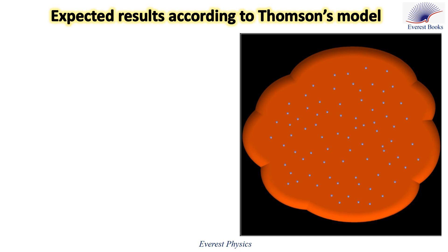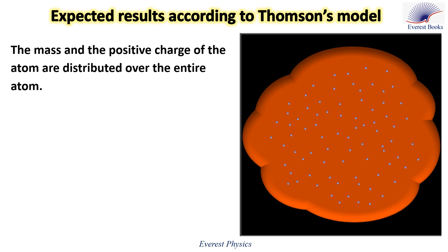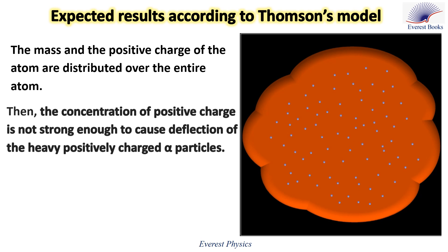What are the expected results of the gold foil experiment according to Thomson's model? According to Thomson's model, the mass and the positive charge of the atom are distributed over the entire atom, as you see in this figure.